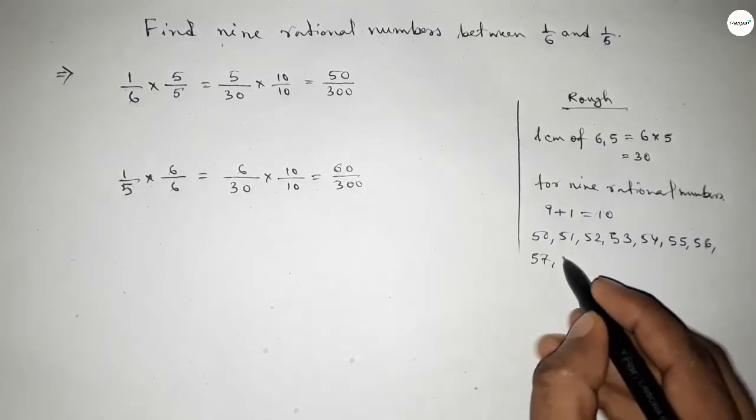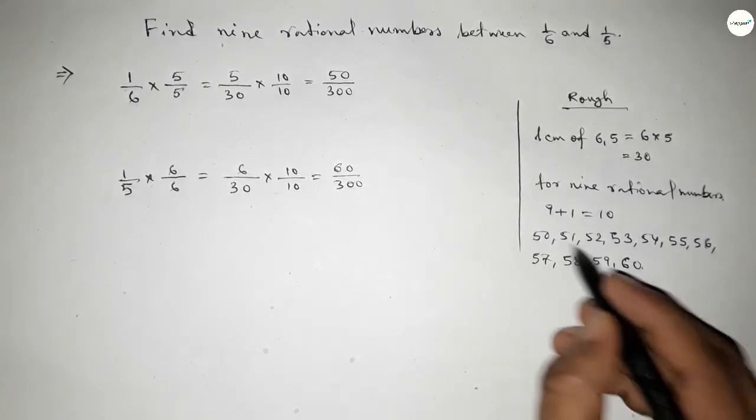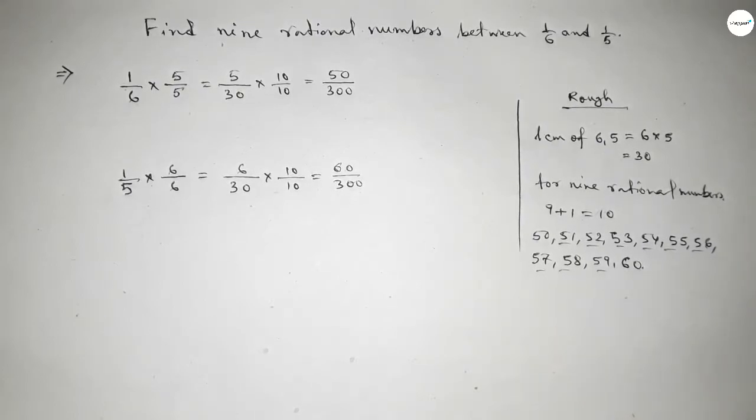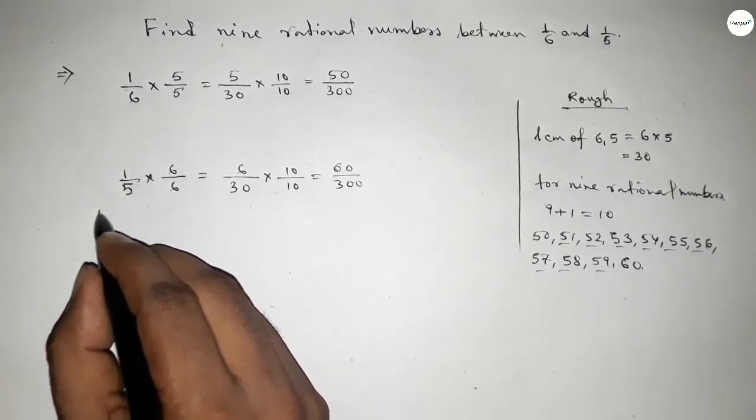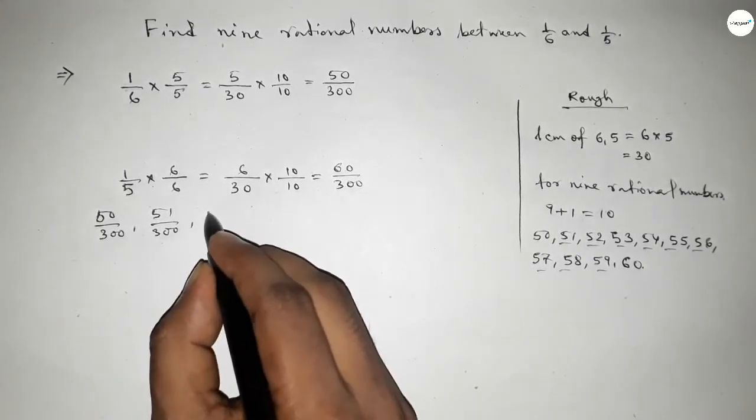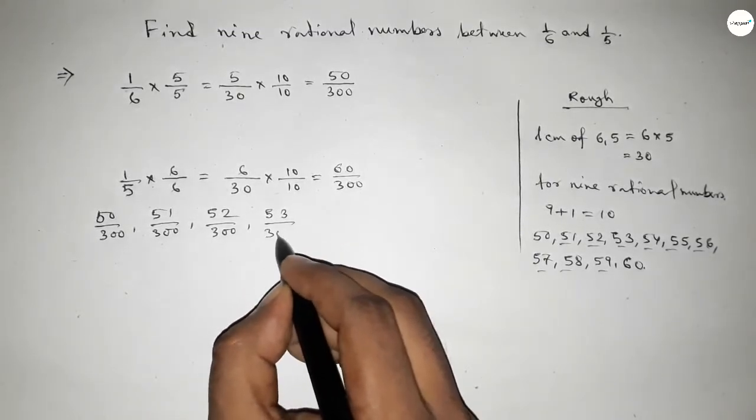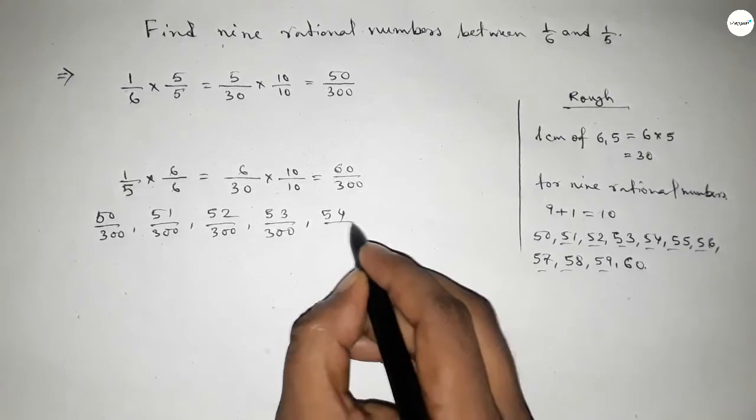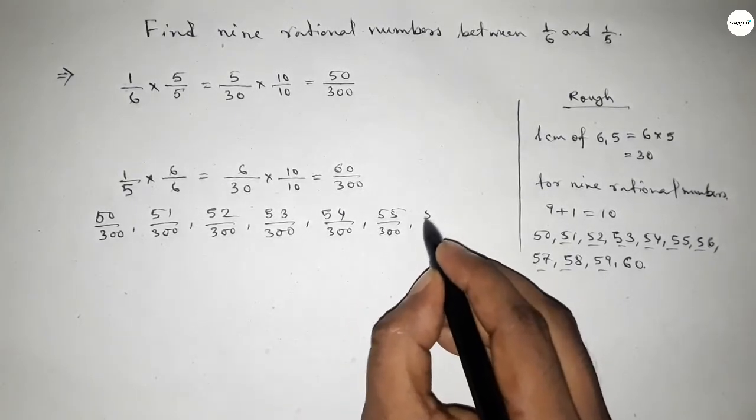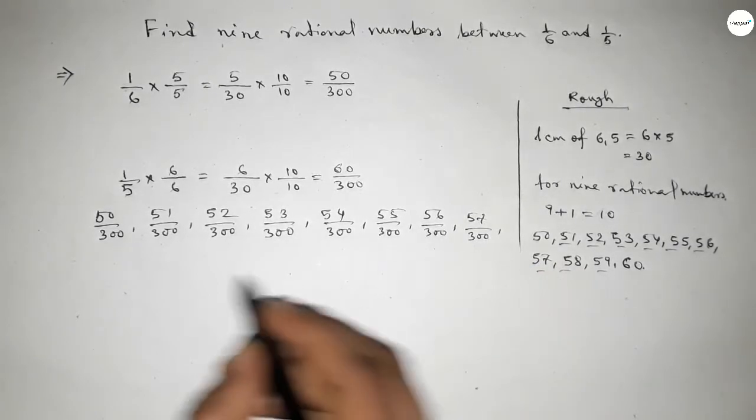Now write down all the rational numbers here. So here, first one 50/300 and 51/300 up to 60/300. These are all the rational numbers.